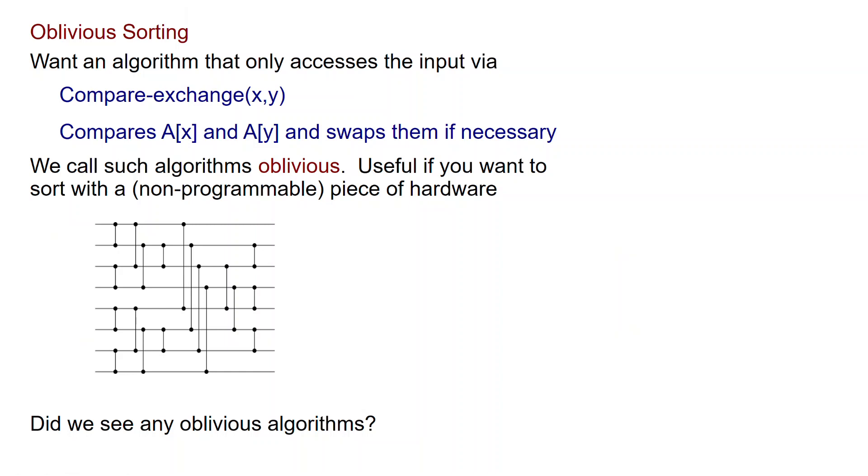Such an algorithm is called Oblivious. Oblivious algorithms are very useful if you want to sort with a non-programmable piece of hardware. That's because an Oblivious algorithm allows you to write down a circuit which performs all the comparisons for every input. Interestingly Oblivious algorithms are also useful for something else. Specifically they are useful for NP hardness. If you want to give the tightest examples of NP hardness which we should see later you are going to require an Oblivious sorting algorithm.